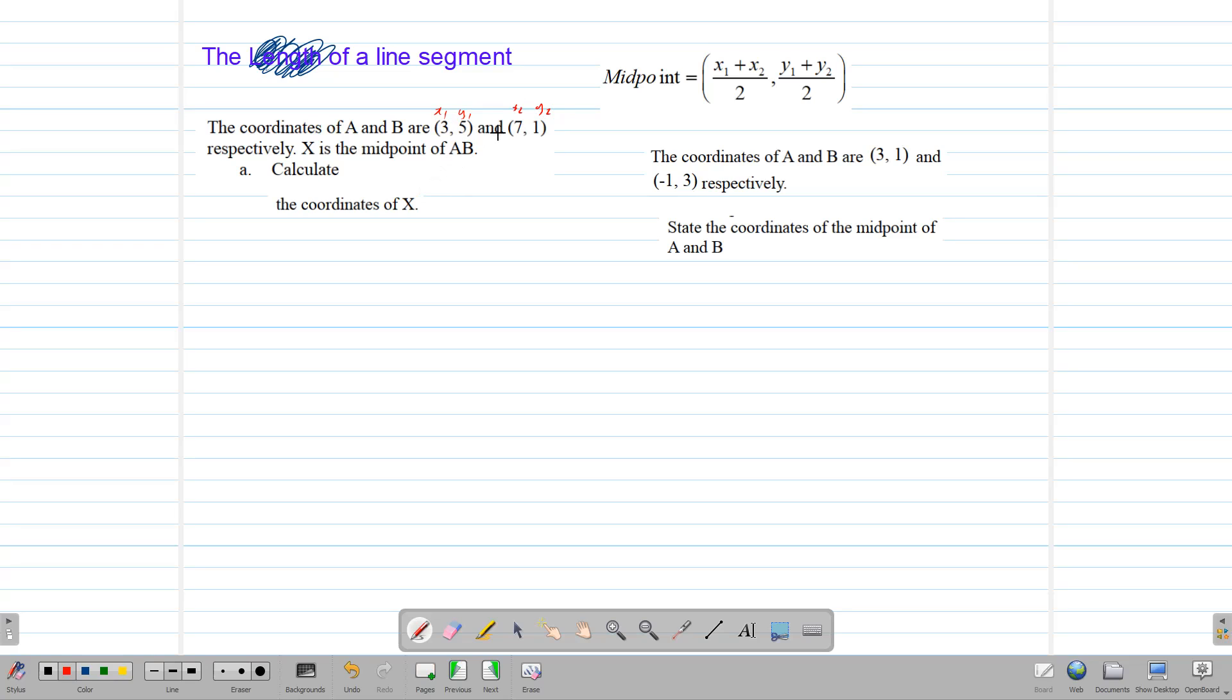So we are going to sketch a line here. Let's say this is our line. This is A, and this is B. Now the coordinates of A are 3, 5, and the coordinates of B are 7, 1. And we want to find a point that lands right in the middle, that x. So what will be the coordinates of that point?